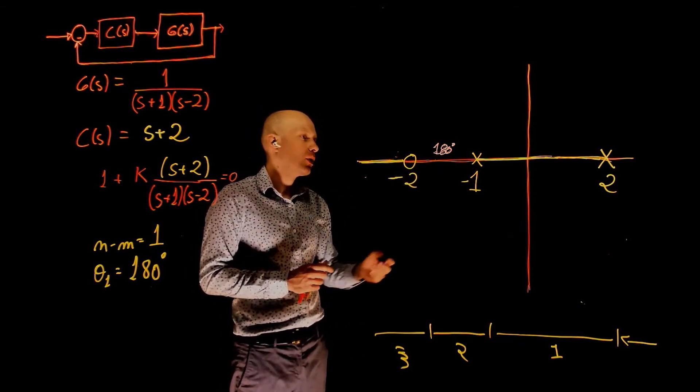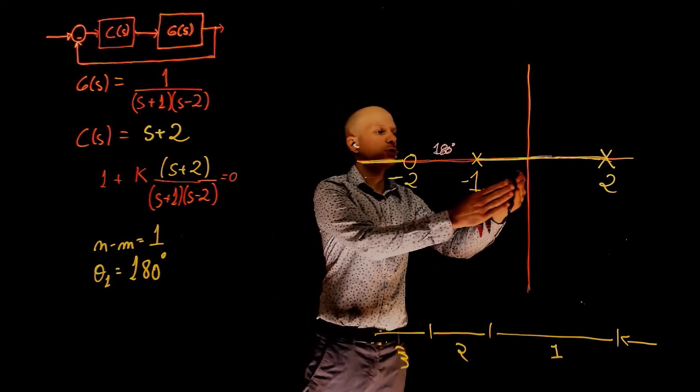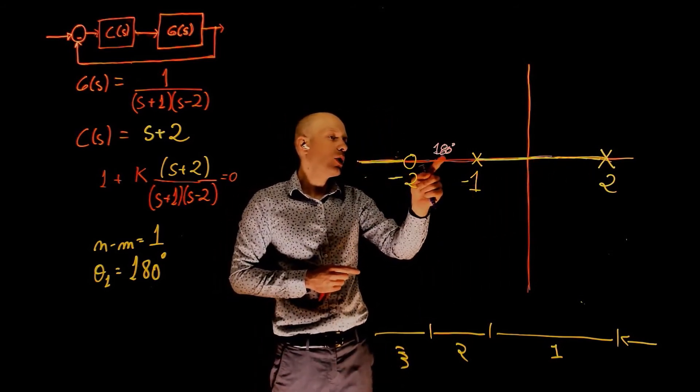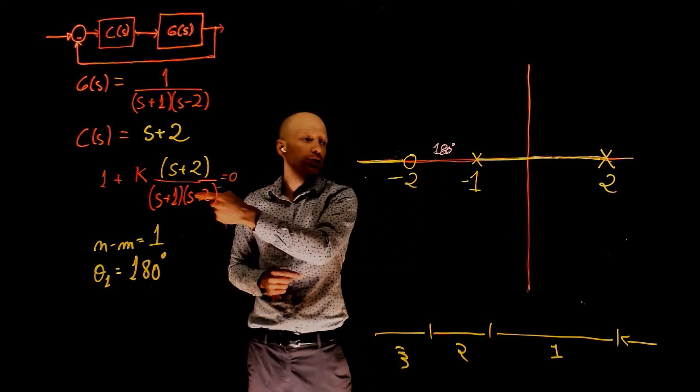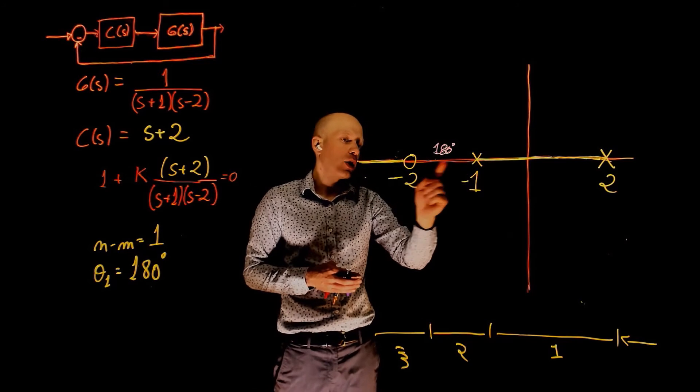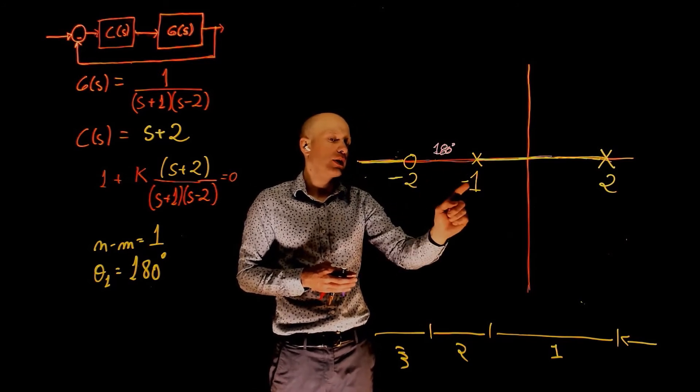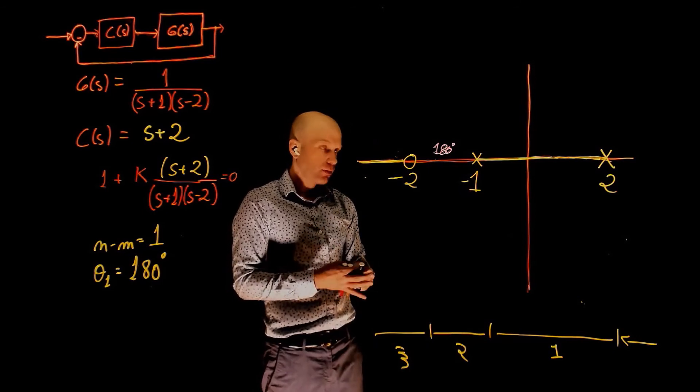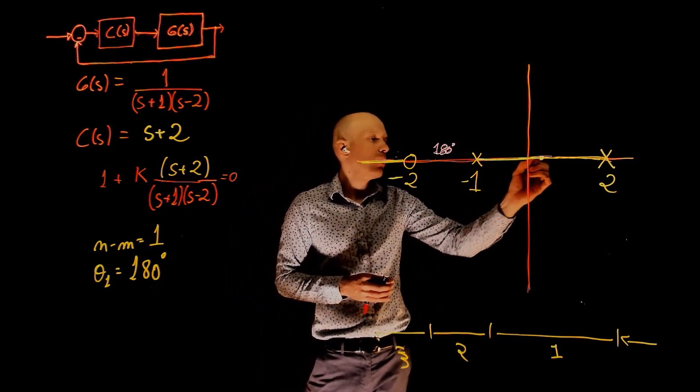So what is happening? These two poles will come together. One of them will have to come to the zero. And the other one will use the asymptote. So the other one needs to go to negative infinity. This pole cannot cross into this part between negative 2 and negative 1 because there is no root locus in there.